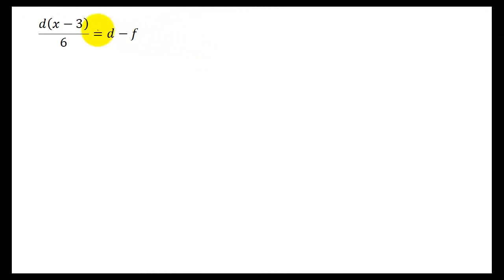Right, in this last question, we're going to make good use of factorisation again. And we're going to make D the subject of this one. And once again, the first thing we want to do is get rid of the fractions. So we're going to times both sides by 6.